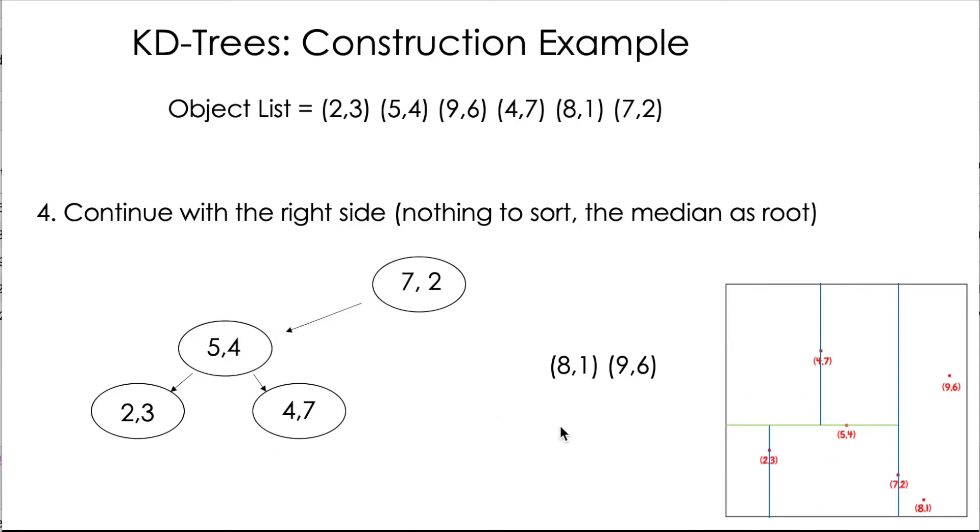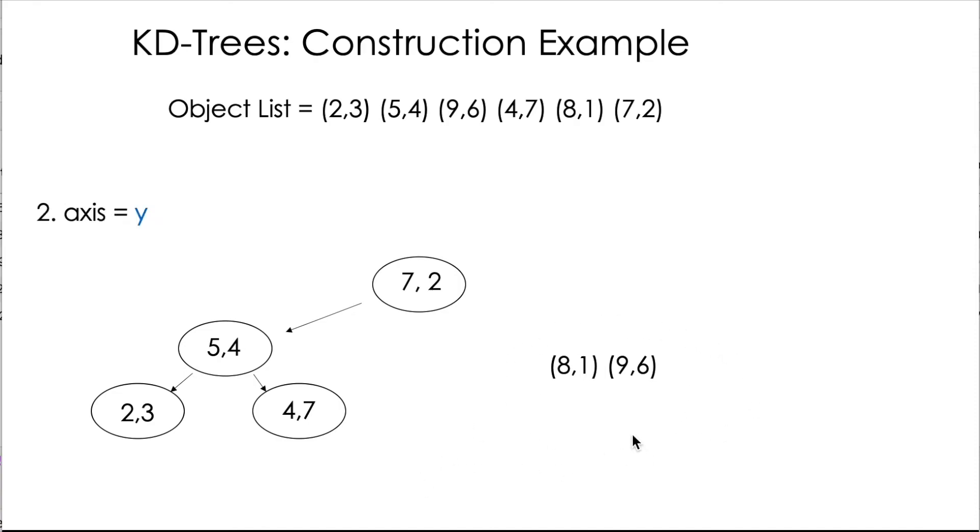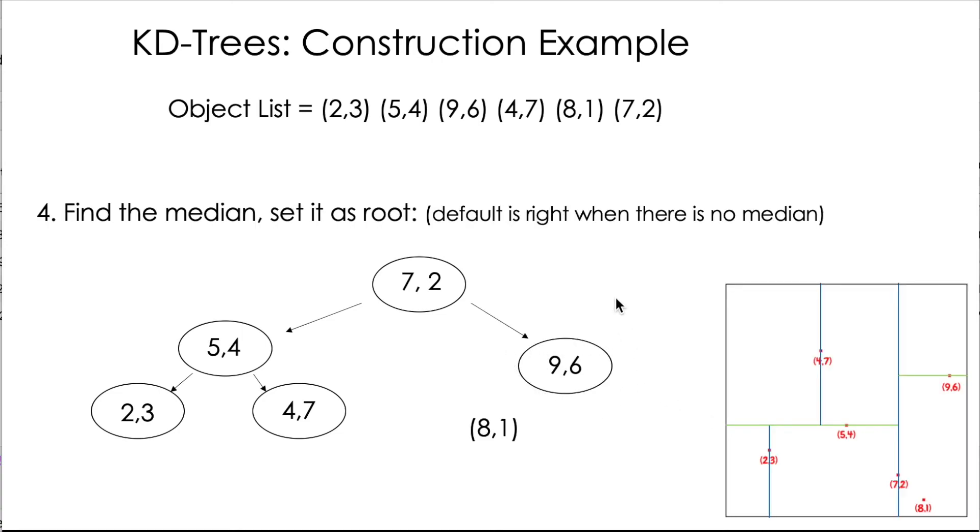Now we need to continue with this side, with the right side. The axis is y. Recall that we started with x in the root. We need to sort our data points according to y, create this sorting, and then we need to choose the median. Again, we have two medians. So we need to choose the one in the right side and it's going to be 9,6. So this is our new root and this creates a new cut here. This is a horizontal cut because we are dealing with the axis y and is positioned in the number 6 right here.